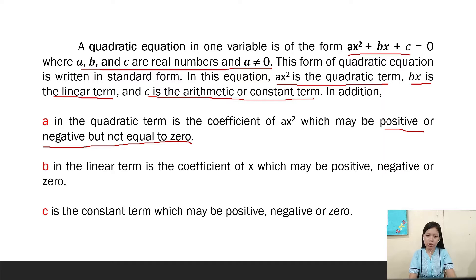b in the linear term is the coefficient of x, which may be positive, negative, or zero. c is the constant term, which may also be positive, negative, or zero.